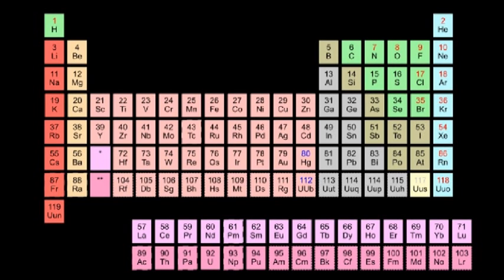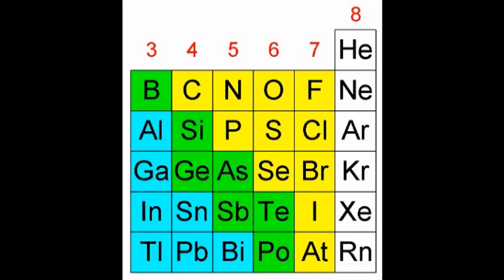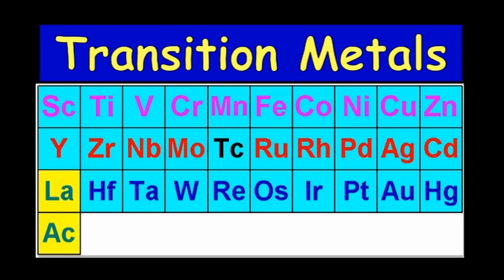These examples looked at simple two-element compounds. Valence can be complex — many elements have more than one valence or oxidation state. This is more common in elements to the right of the periodic table that have lots of electrons in their outer valence shells. The transition metals in the centre of the periodic table mostly display variable valences as well.